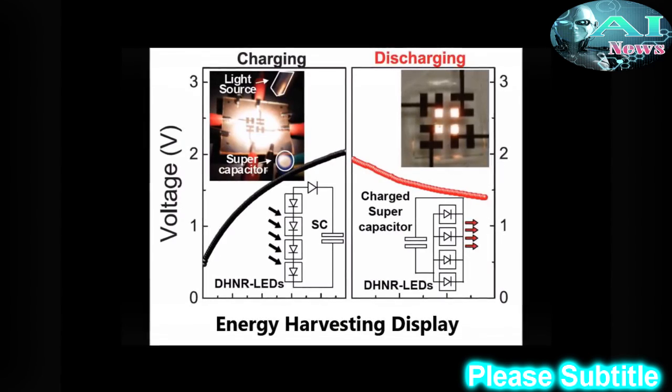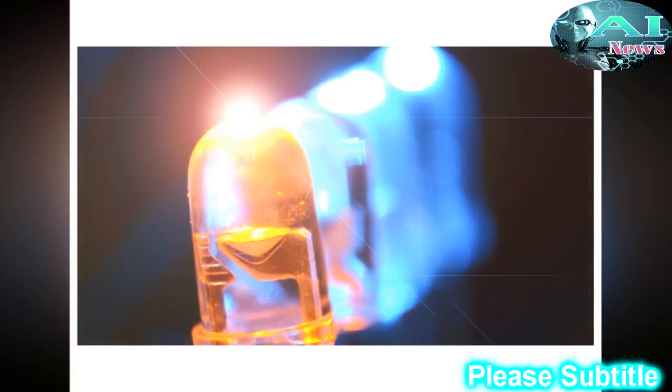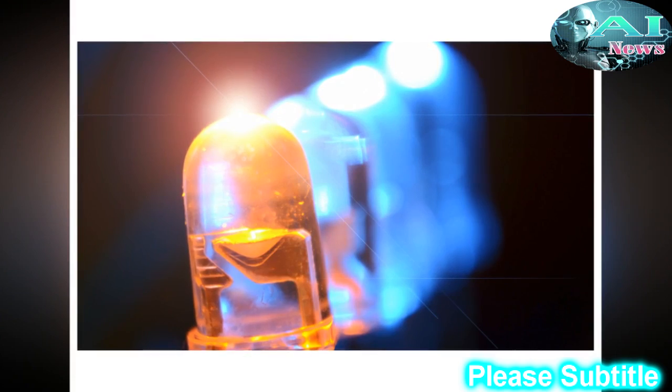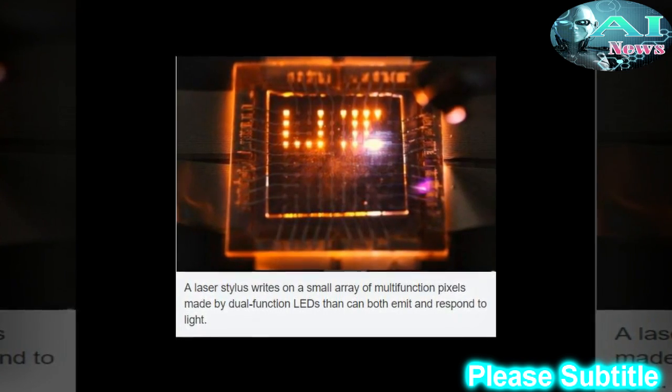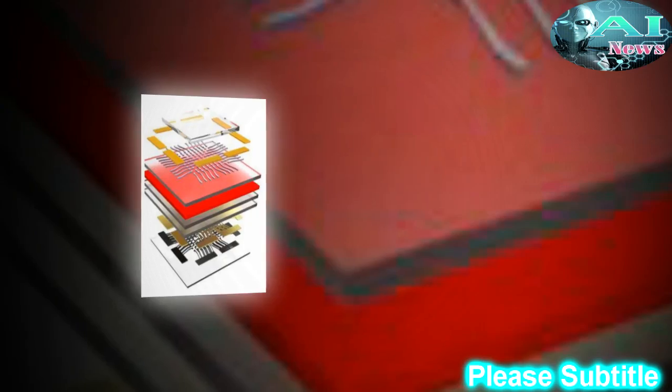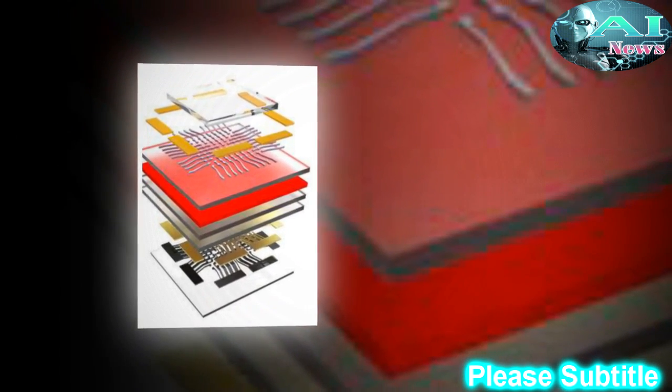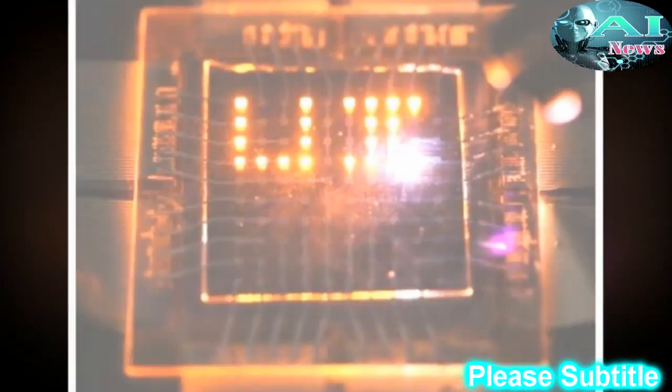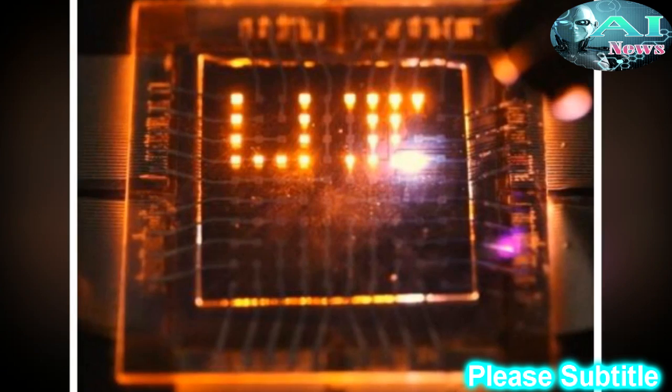The researchers demonstrated pixels that automatically adjust brightness, as well as pixels that respond to an approaching finger, which could be integrated into interactive displays that respond to touchless gestures or recognize objects. They also demonstrated arrays that respond to a laser stylus, which could be the basis of smart whiteboards, tablets or other surfaces for writing or drawing with light.